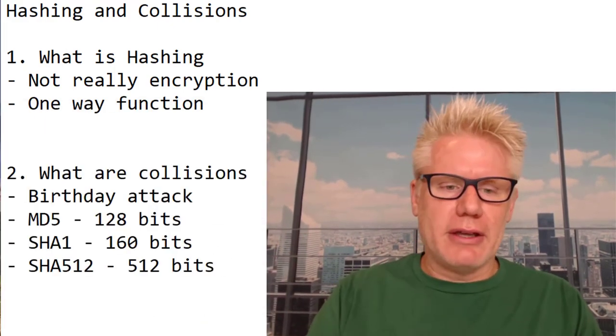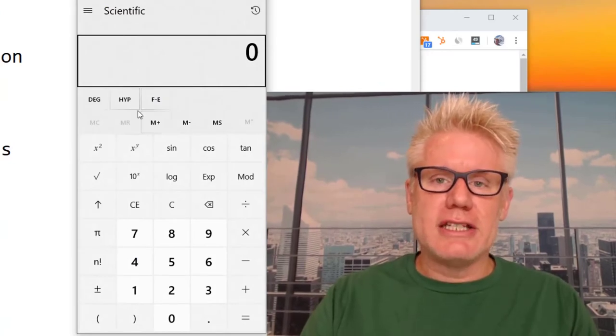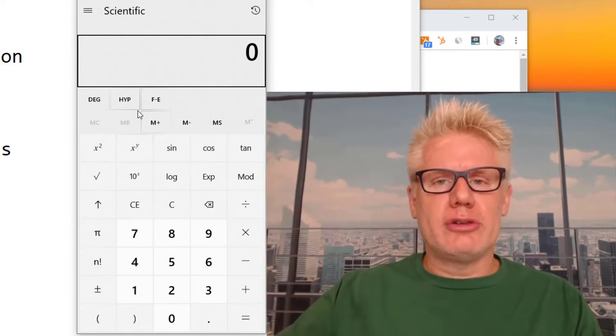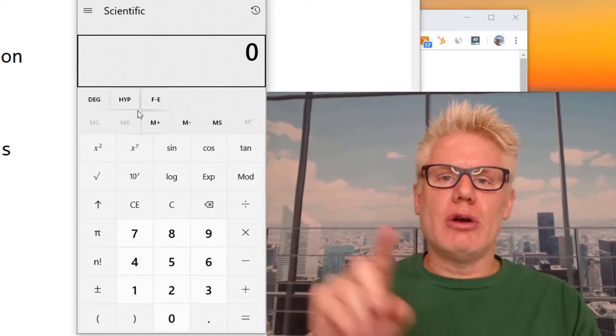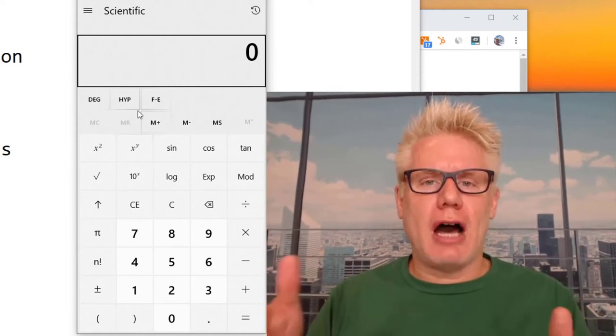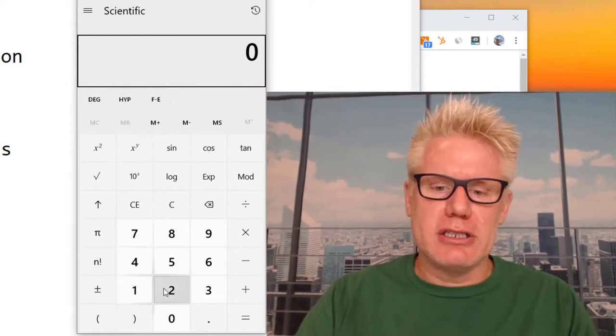So I'm going to bring up a calculator in scientific mode. And with 128 bits, that's 2 to the 128th power, because we have a zero or one, which is the two, 128 bits. Those are the number of combinations with 128 bits. Let's just look at that.